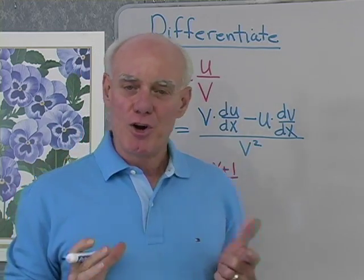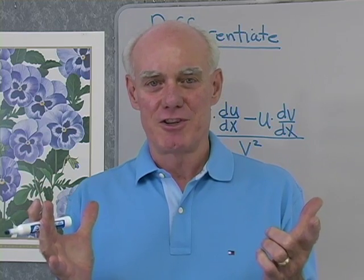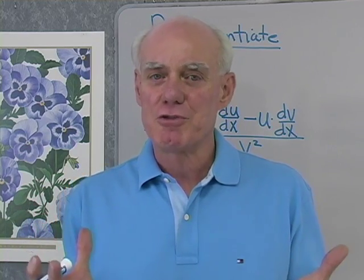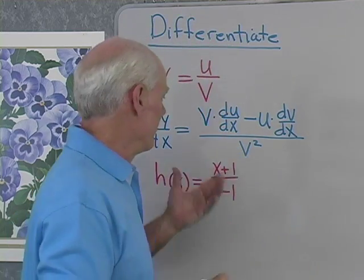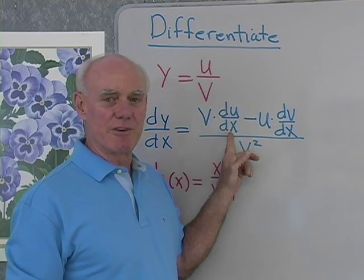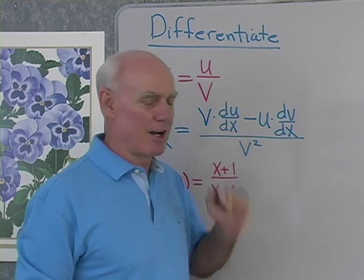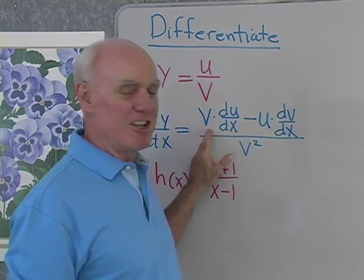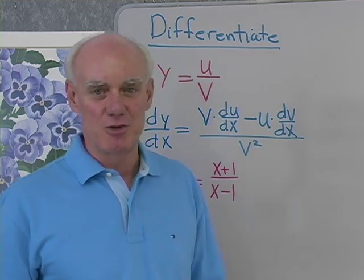Now, if you want to know why this rule is true, you have to go back to the book and look at the derivation of this rule. That will tell you why it's true. But once we know it's true, all we need to do is apply it. Before I can do that, though, I have to have it memorized. So it's the bottom times the derivative of the top, minus the top times the derivative of the bottom, all divided by the bottom squared — v du/dx minus u dv/dx, all divided by v squared.